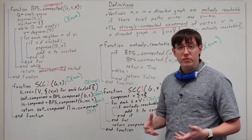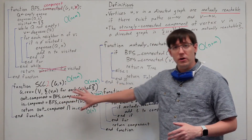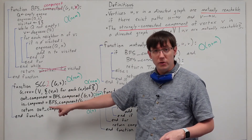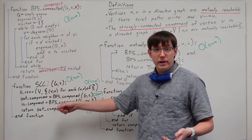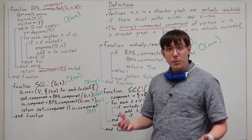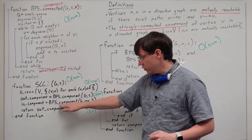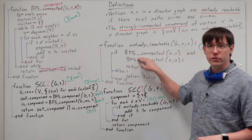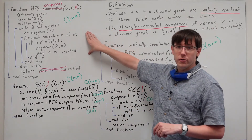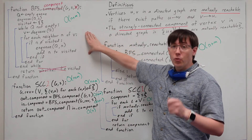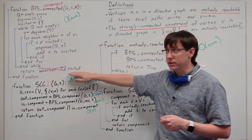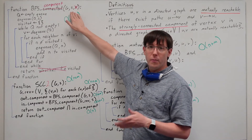So clearly, if both of these algorithms for finding strongly connected components are correct, then we would prefer version 2. Our task now is to prove the correctness of these algorithms. And because both of these algorithms rely on calls to breadth-first search, we first need to show that when we run breadth-first search on a directed graph, we will visit every vertex that is reachable from s.